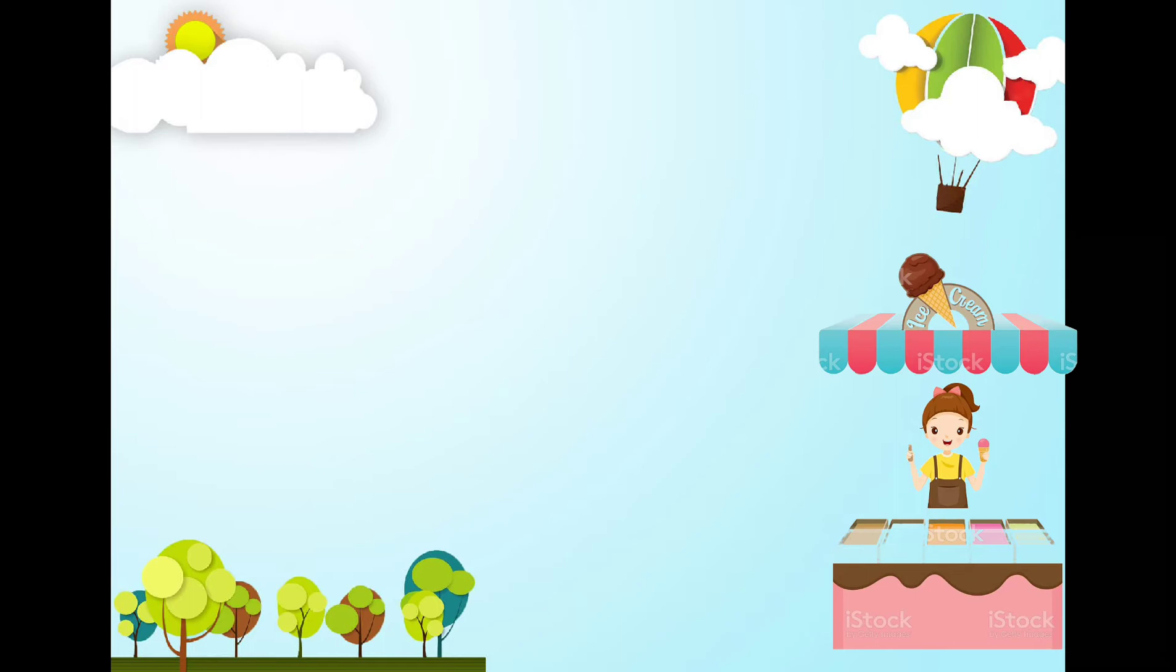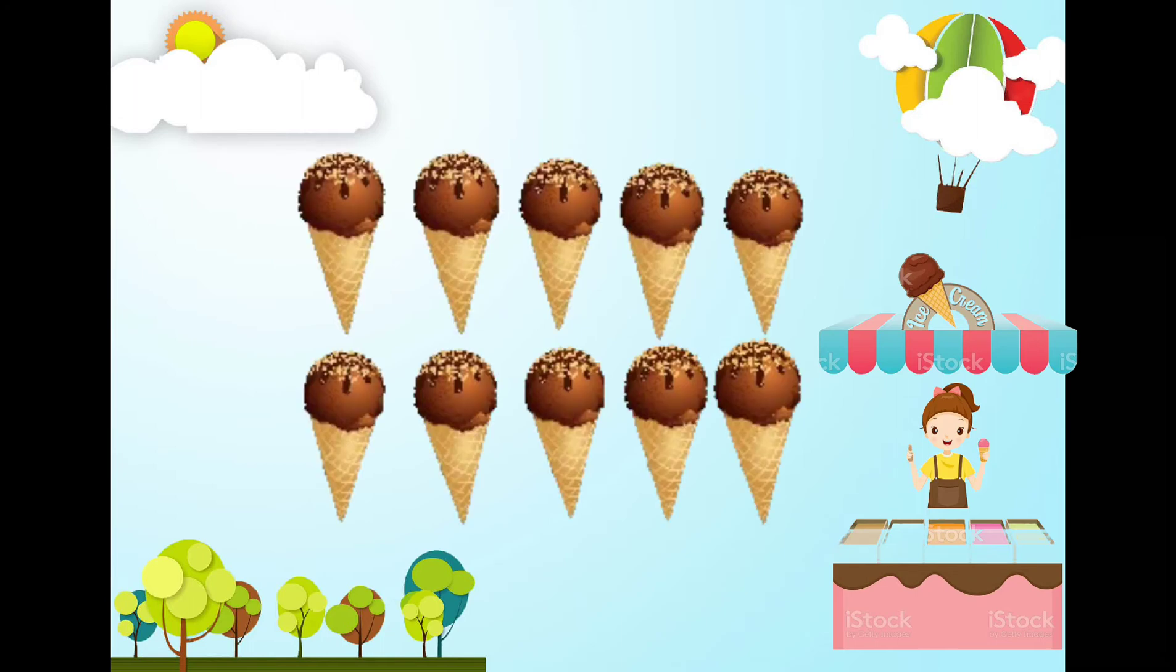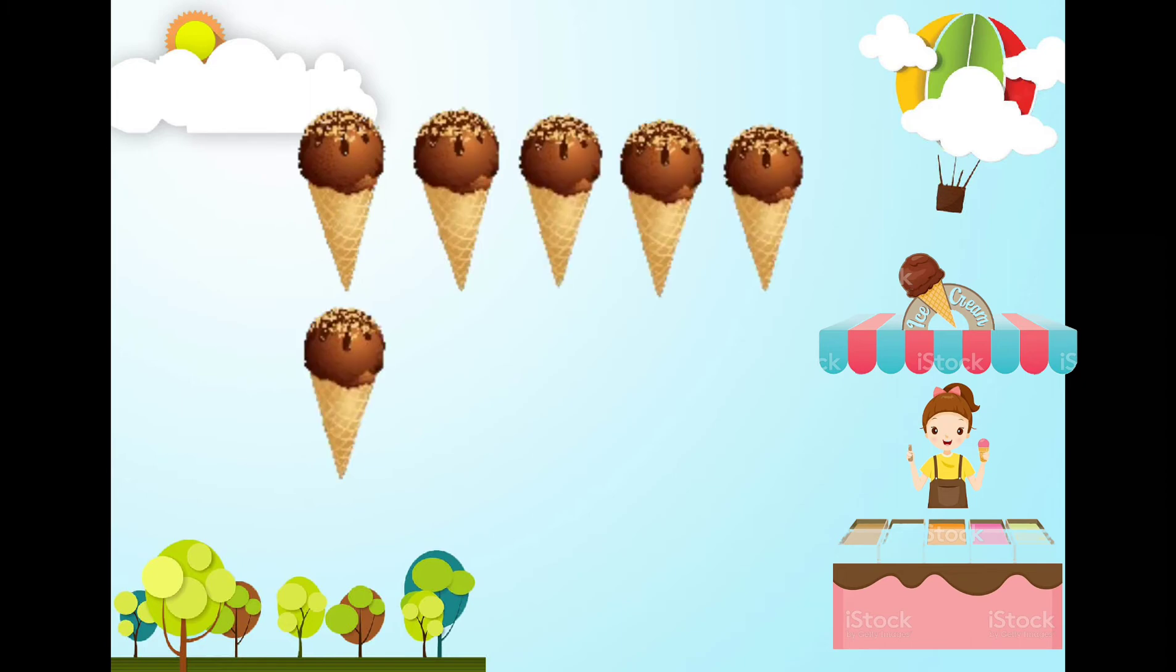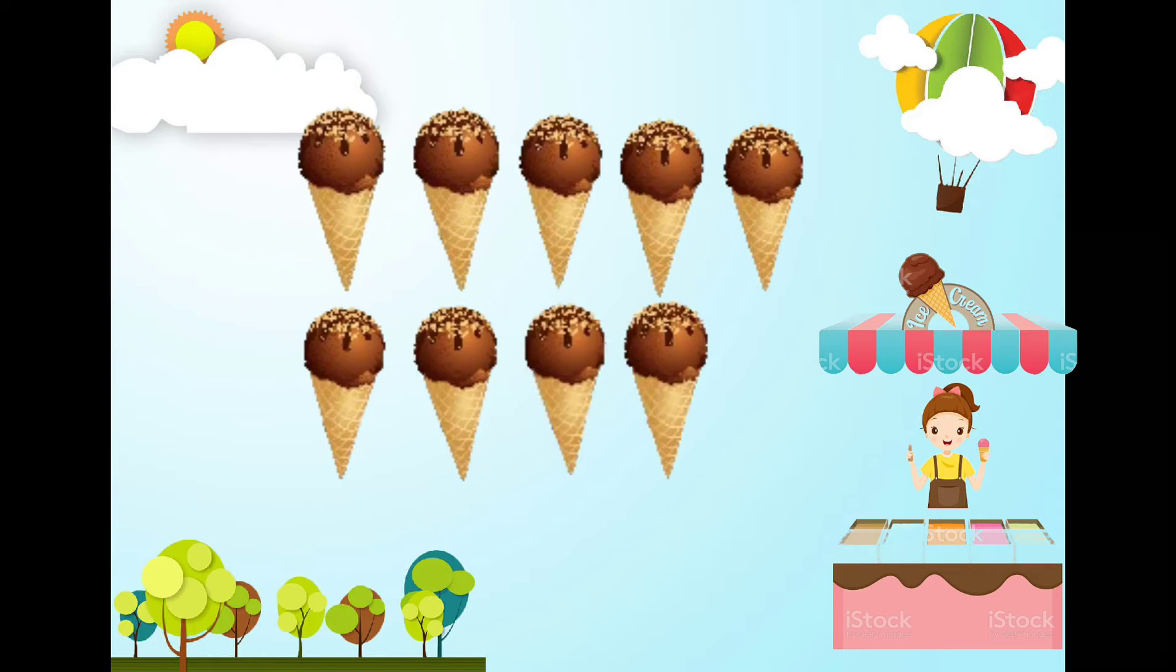Hmm, what do I have here? I have an ice cream. Do you want some? But, first, let us count an ice cream. 1, 2, 3, 4, 5, 6, 7, 8, 9, 10. We have 10 ice creams.